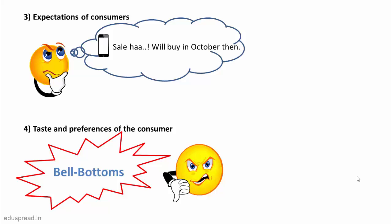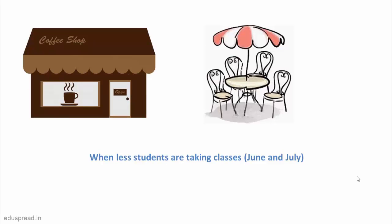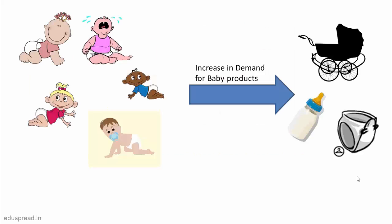In addition to the preceding factors, market demand depends on the number of buyers as well. For example, a cafe in the Delhi University area will have more demand during semester time, but in June and July when colleges are closed, demand will decrease because fewer buyers are in that area. At the state or country level, consider population demographics — a state with an increasing birth rate can expect an increase in demand for baby products.